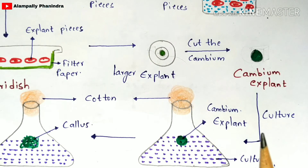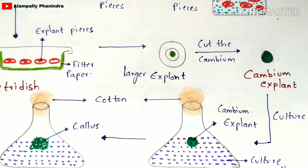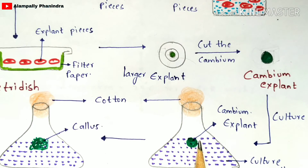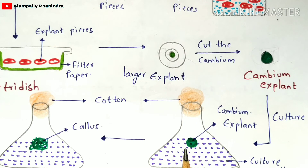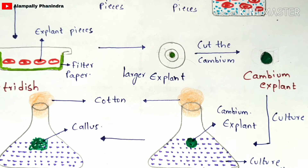In the next step, the callus will develop by itself. This process is called inoculation, and it should be done at 25 degrees Celsius for six to eight weeks. By the sixth week itself you can see the initiation of callus formation. Cell division occurs in the explant, producing daughter cells which aggregate together to form a mass of cells — this mass is called callus.